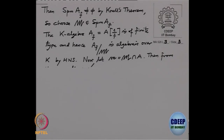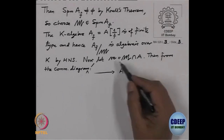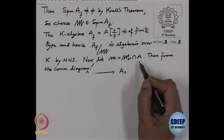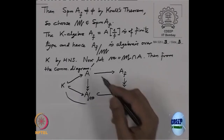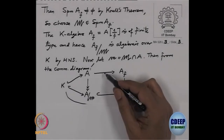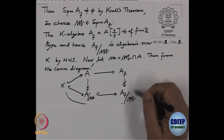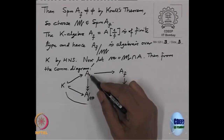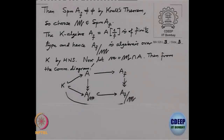Now contract this maximal ideal back to A. There is a natural ring homomorphism from A to A localized at F, and gothic M is a maximal ideal in A localized at F, so I contract it to A: consider small gothic m = capital gothic M intersection A. Look at this commutative diagram: A maps to A localized at F via the localization map, then to A_F mod capital M via the surjection, and A maps to A mod small gothic m, with K contained throughout.